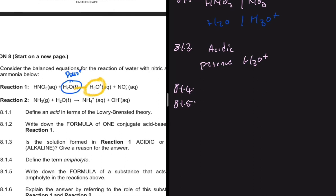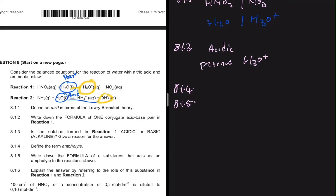In reaction two, H2O donates a proton and we are left with OH minus, so it's acting as an acid because it is a proton donor. In reaction two H2O is an acid. That makes it an ampholyte — in one reaction it acts as a base, and in another it acts as an acid. So the formula of our ampholyte is H2O.